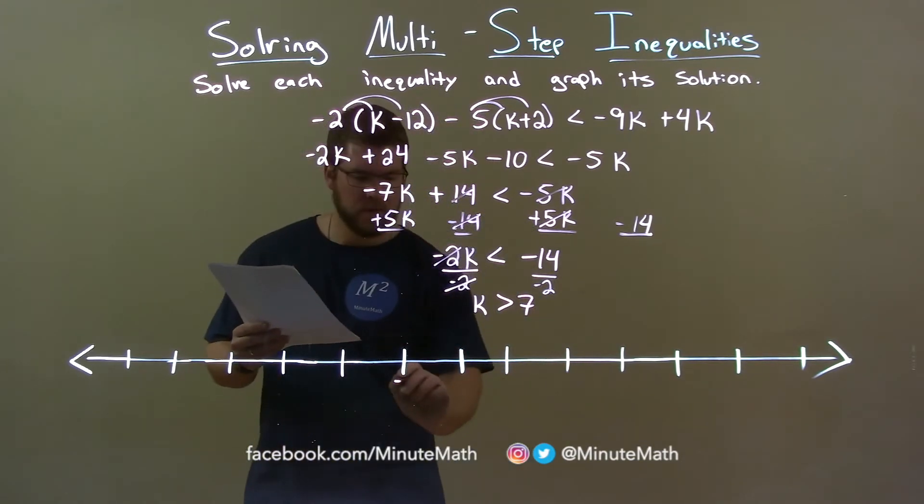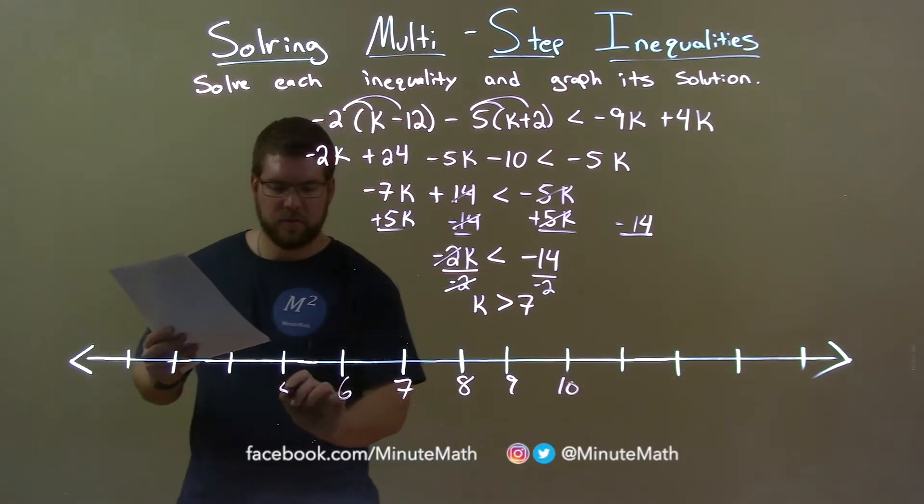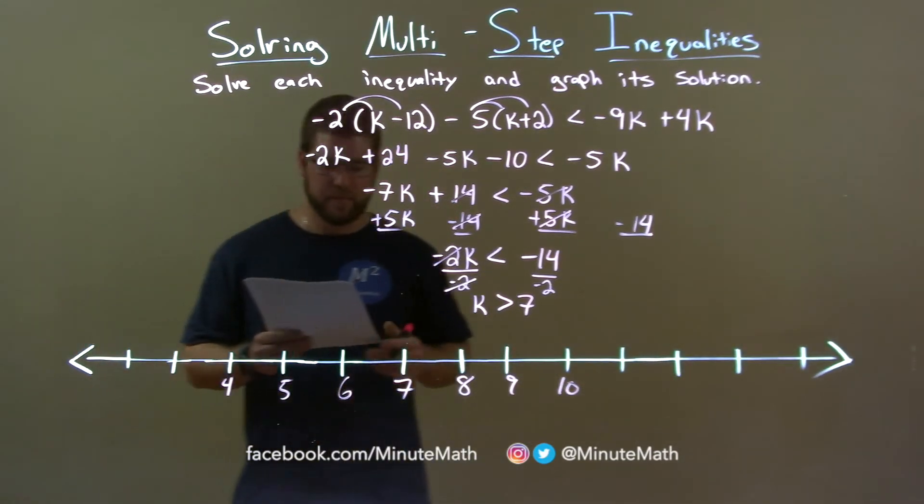So, let's graph it. 7 here. 8, 9, 10. And 6, 5, 4.